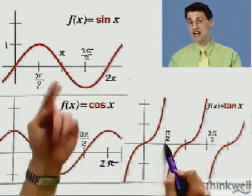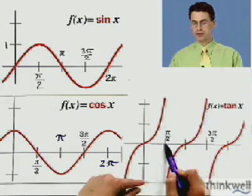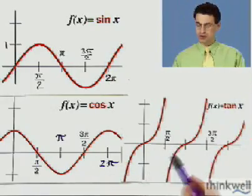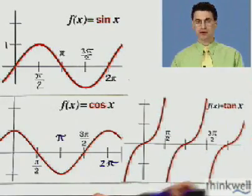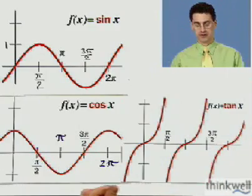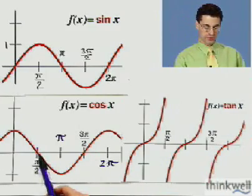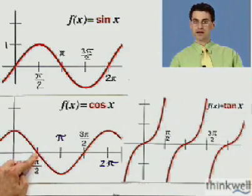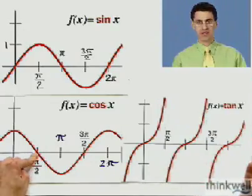Well, because, remember, the tangent is sine over cosine. So if we wanted to see what tangent equals at pi over 2, I'd have to plug in pi over 2 for sine and cosine. So I have sine of pi over 2 over cosine of pi over 2. But look at cosine of pi over 2. It's 0. So we'd have something divided by 0. That's undefined.